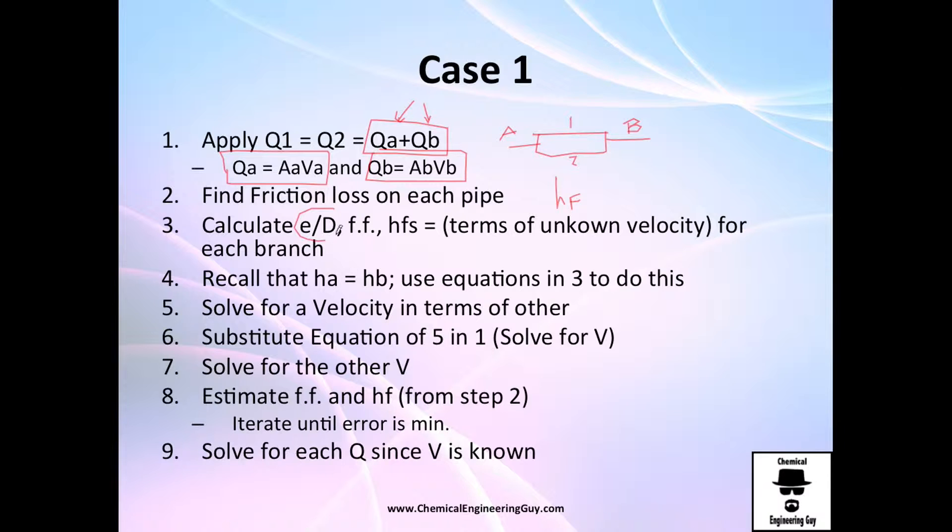We need to calculate friction loss. We've got to check out our epsilon on D, or relative roughness, which is roughness, which probably you know it because you know the piping, for example steel, and the diameter. Then let us calculate the friction factor, and the thing here is that for the friction factor you're going to need Reynolds number. Reynolds number needs velocity, so let us set up this as an equation, and you're going to get an equation in terms of unknown velocity for each branch.